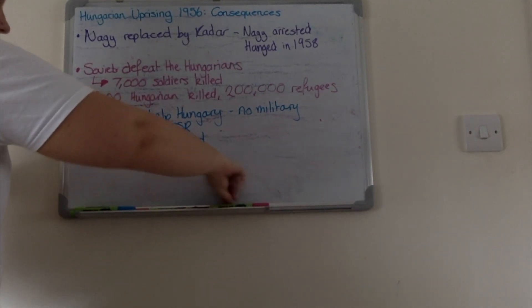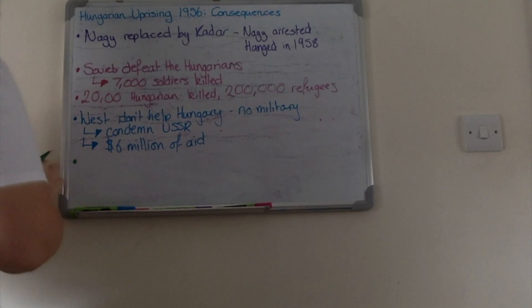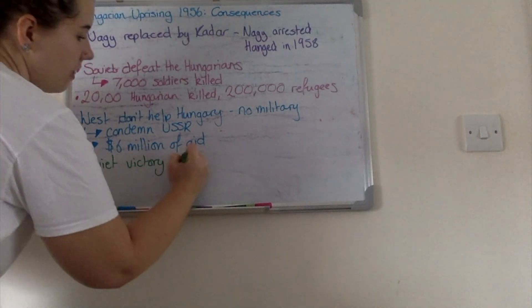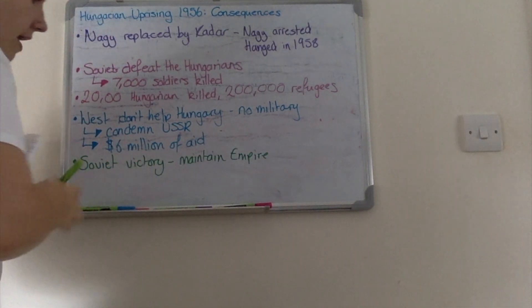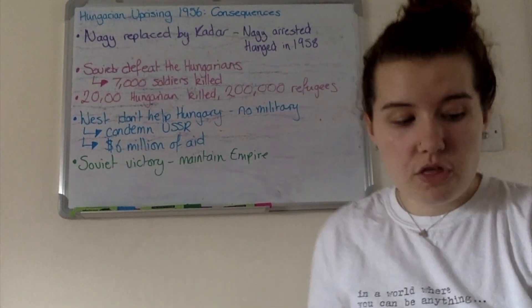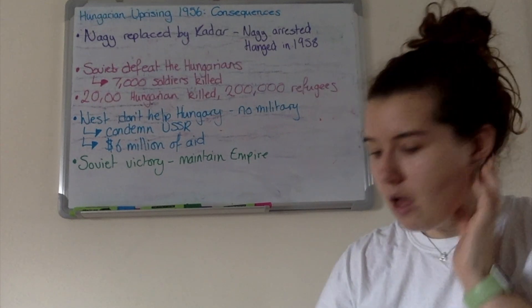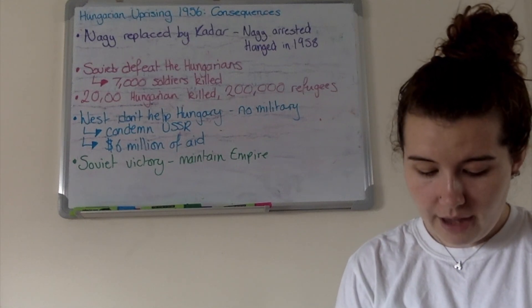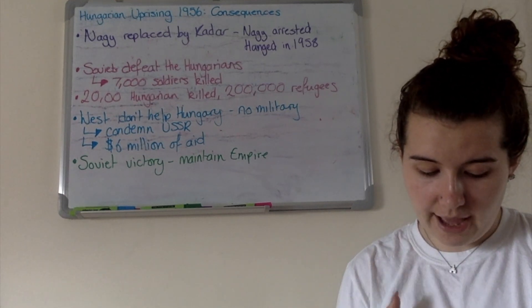The final consequence is that the Soviets see this as a victory, because they maintain their empire. They are able to keep all their satellite states in check — they don't lose Hungary, they keep Hungary. All the other satellite states now know what the consequence will be if they disobey the Soviet Union. The Soviets are able to reassert their authority: you put a foot out of line, this is what happens. It is a real sucker punch for the satellite states, because they thought maybe this was the beginning of change — and it really isn't.